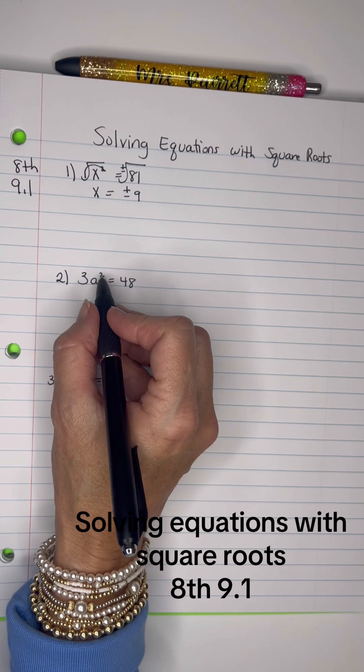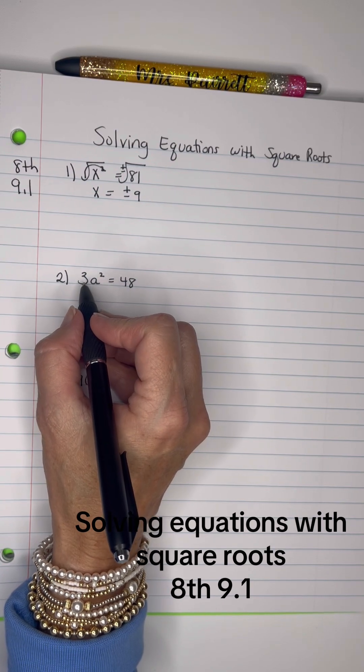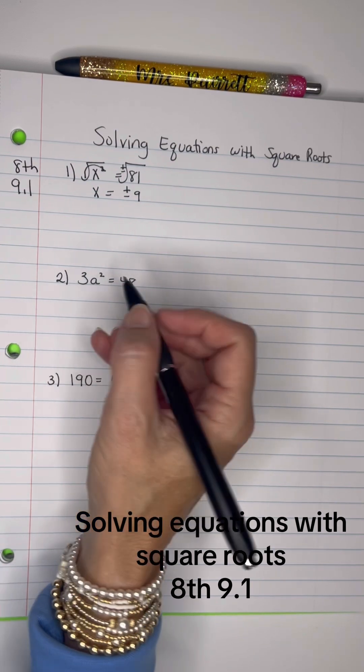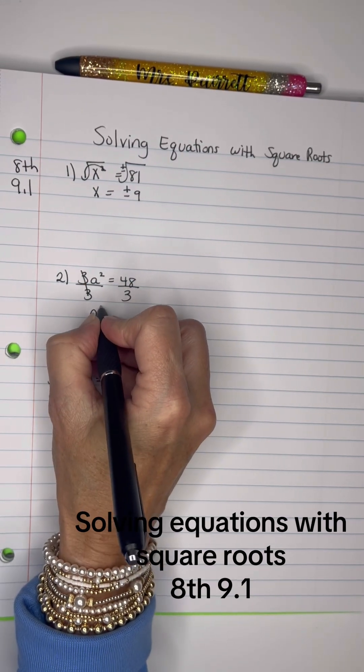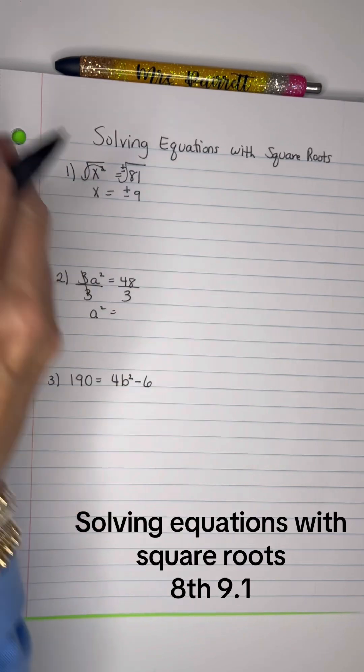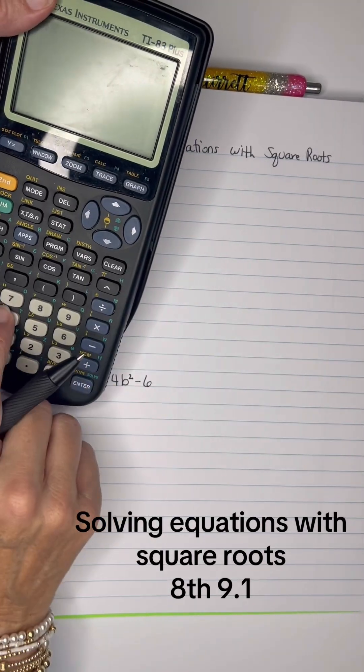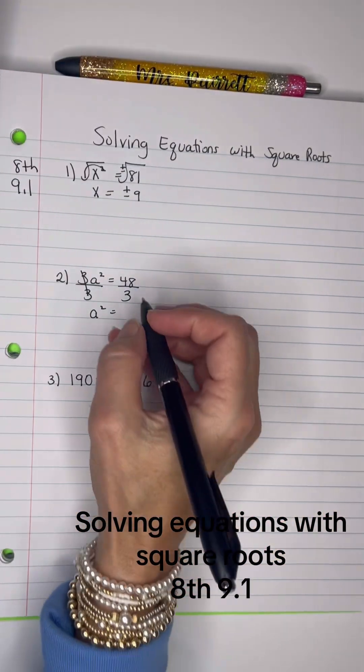On this one, you can't take the square root until you get rid of this 3, and this means 3 is being multiplied by a squared, so I've got to divide both sides by 3. Okay, so we have a squared equals 48 divided by 3, which is 16.